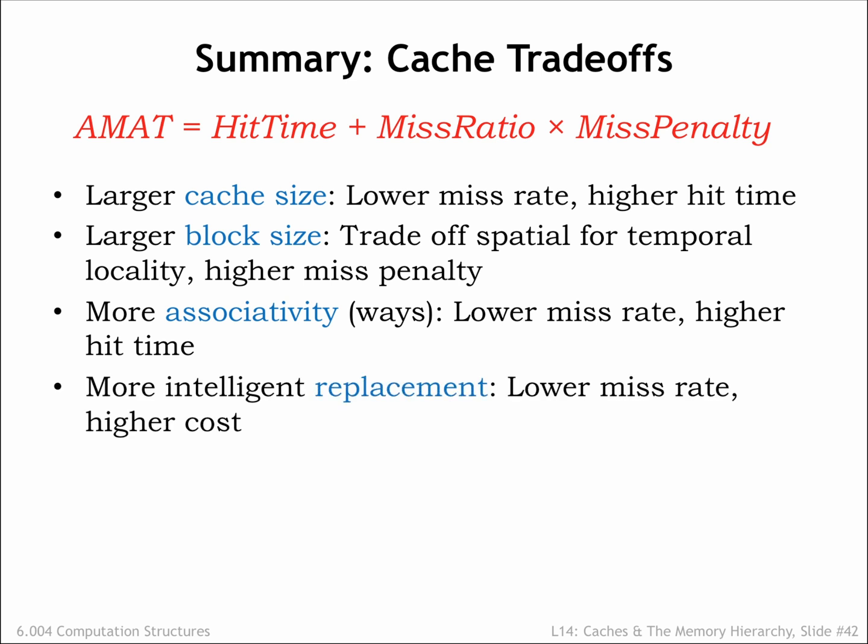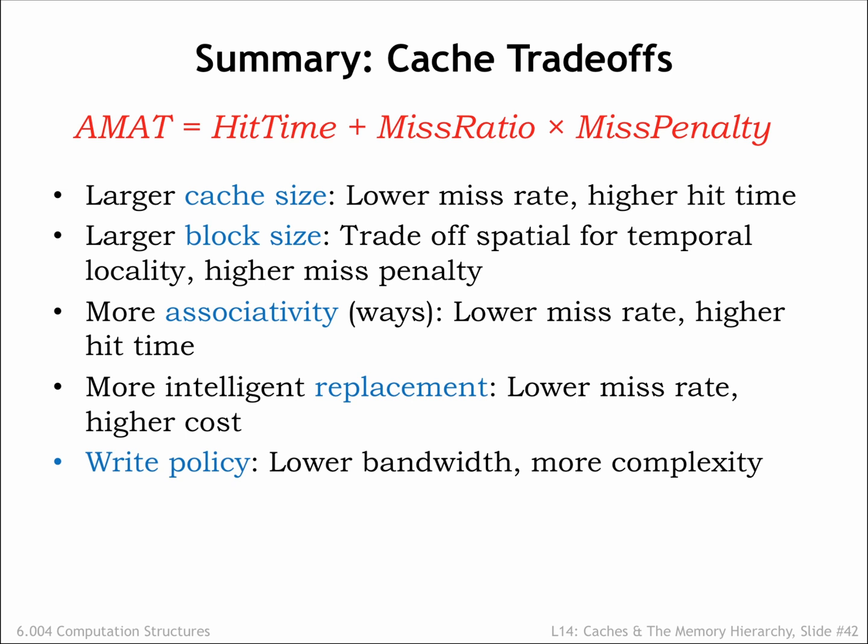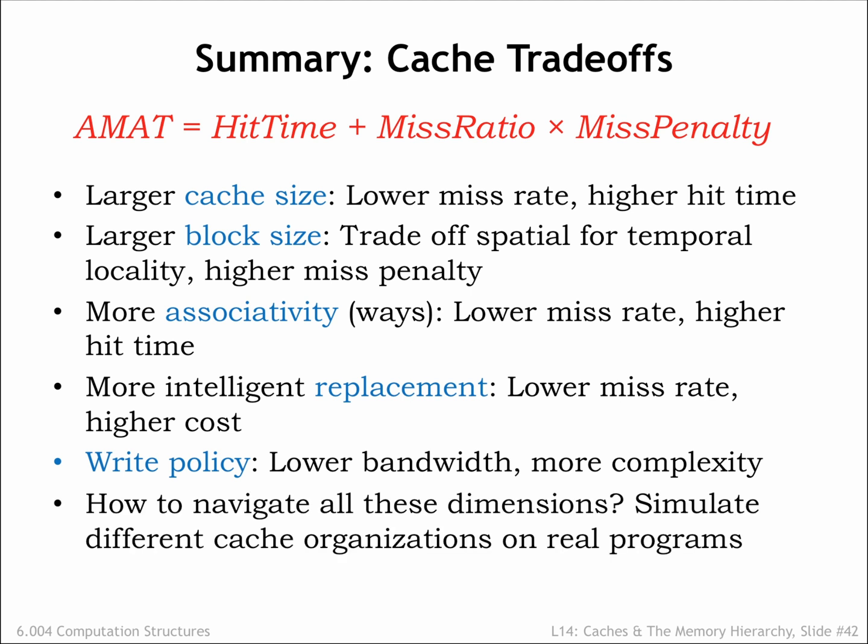Choosing the least recently used cache line for a replacement minimized the impact of replacement on the hit ratio. And finally, we chose to handle writes using a write-back strategy with dirty bits. How do we make the trade-offs among all these architectural choices? As usual, we'll simulate different cache organizations and choose the architectural mix that provides the best performance on our benchmark programs.